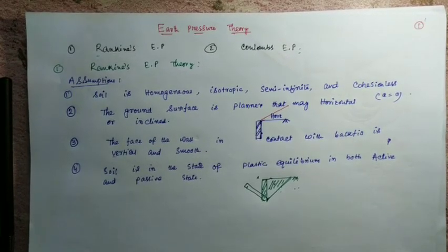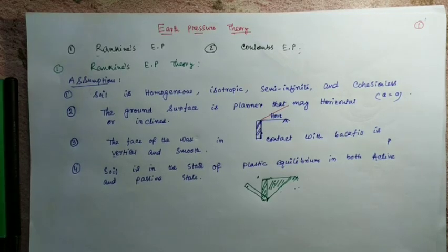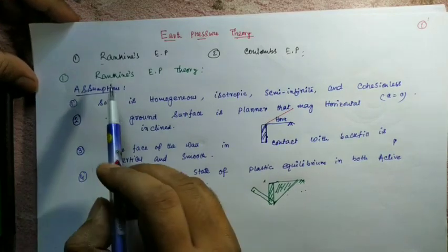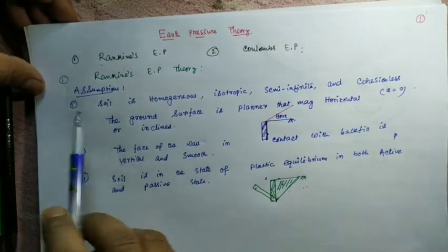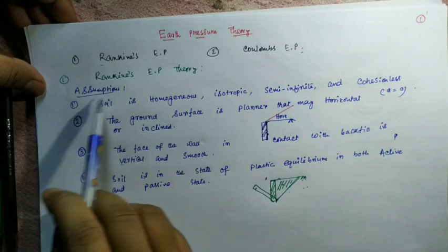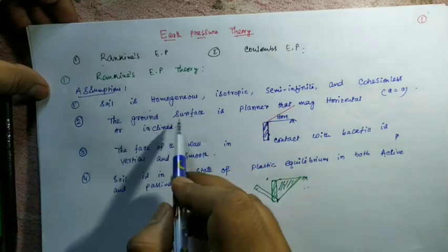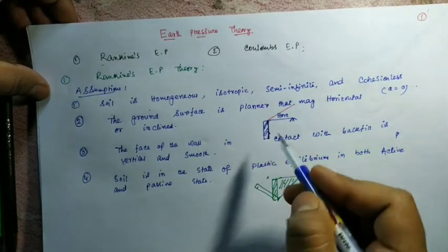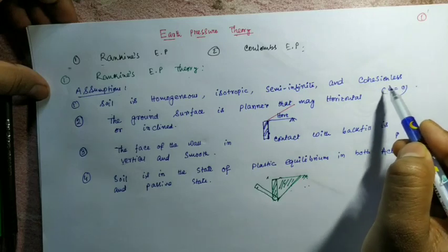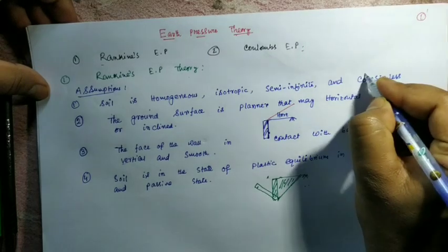Hello everyone. In my last lecture I discussed earth pressure at rest condition. From today's class onwards I am going to discuss active earth pressure. There are mainly two earth pressure theories: one is called Rankine's earth pressure theory and another is Coulomb's earth pressure theory. A very important question may be asked in exams: what are the assumptions of Rankine's earth pressure theory? The first assumption is that soil is homogeneous, isotropic, and semi-infinite, and the soil will be cohesionless, meaning C equals zero — so this is the case of sandy soil.